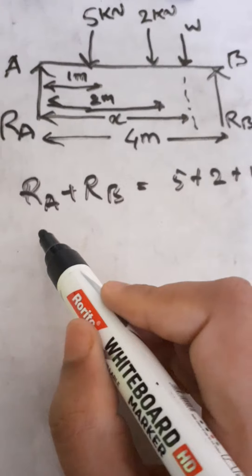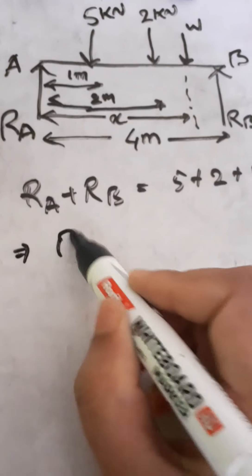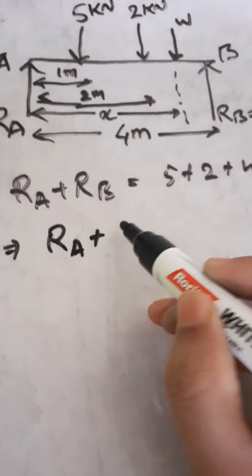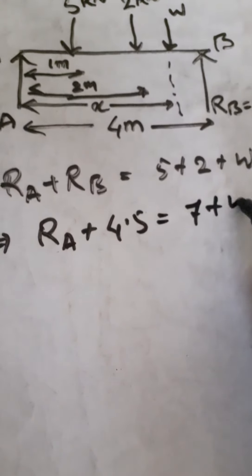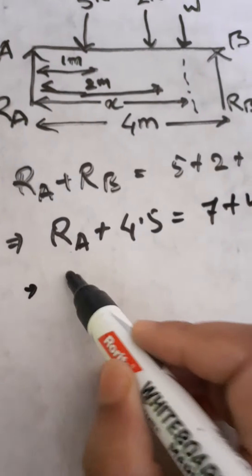Because we have vertical forces, the reactions are equal to the loads. So we add RB value. RB is given as 4.5, so RA plus 4.5 equals 7 plus W.